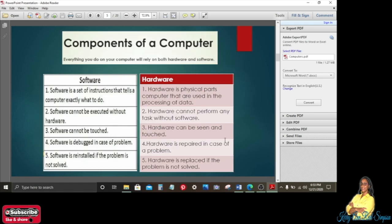Now we're going to be looking at software and hardware. Everything you do on your computer will rely on both hardware and software. Software is a set of instructions that tells a computer exactly what to do. Hardware, on the other hand, is the physical parts of the computer that are used to process the data, of course, into information.